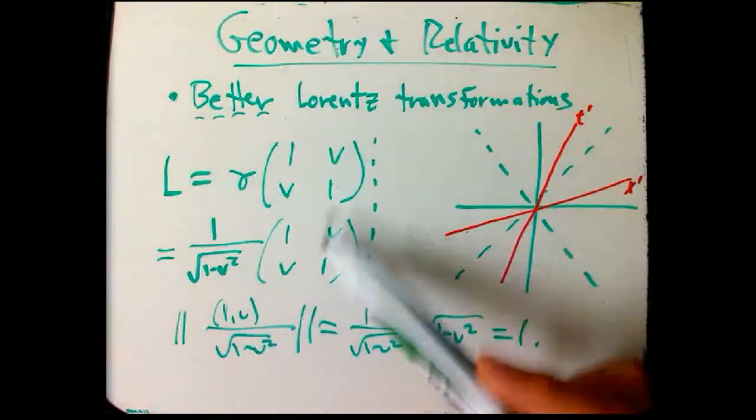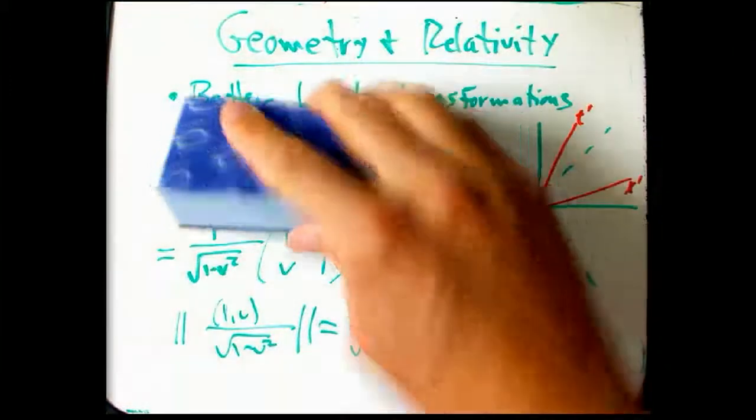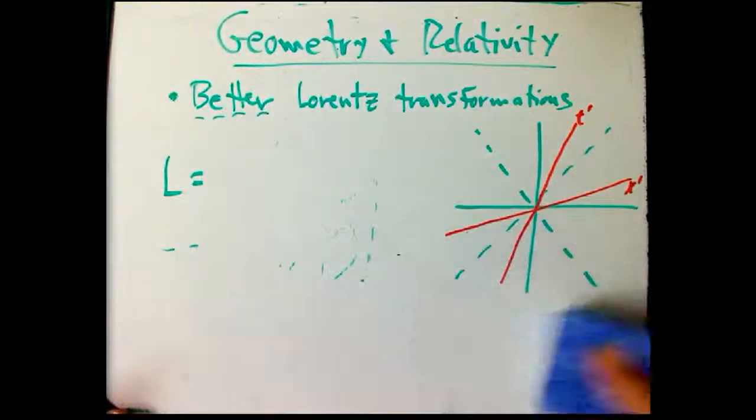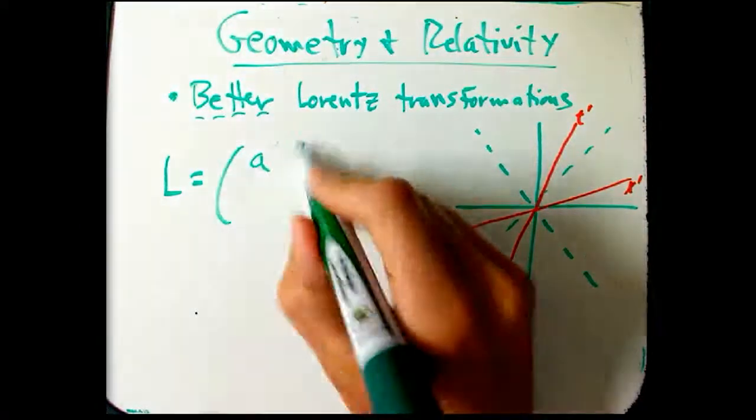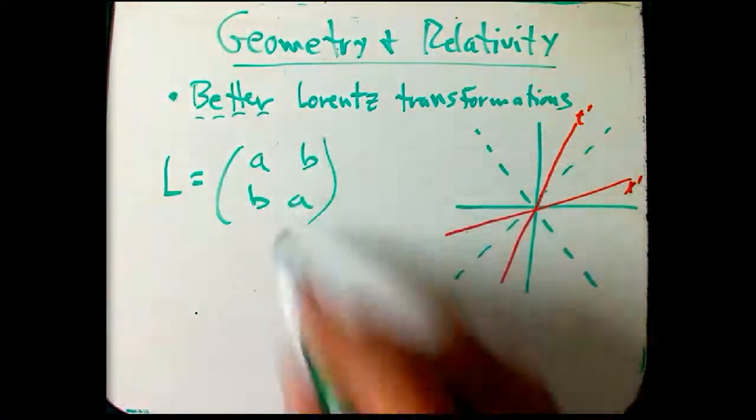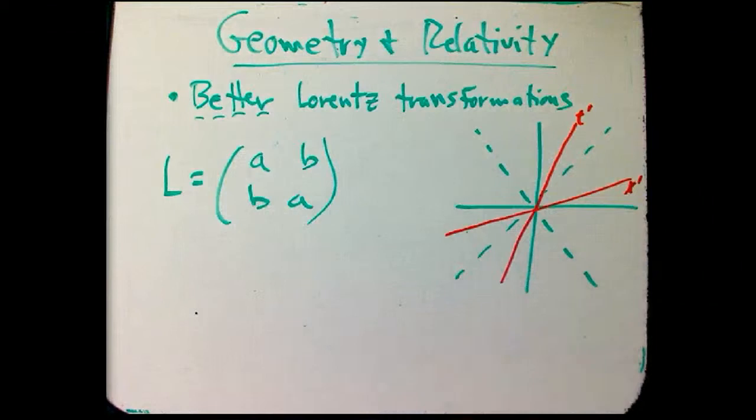Even if we didn't have that formula for it, even if we just knew it's of this form, that it's a, b, b, a - and that's what we're going to start with. We know that it's of this form, and we want to express those in a better way, as functions of some new parameter that's not v.